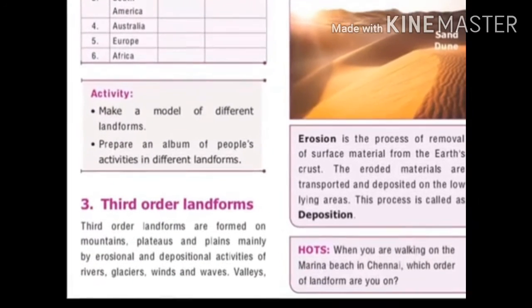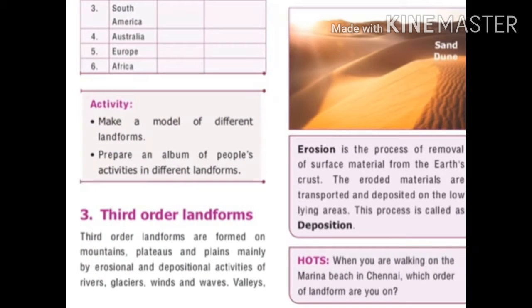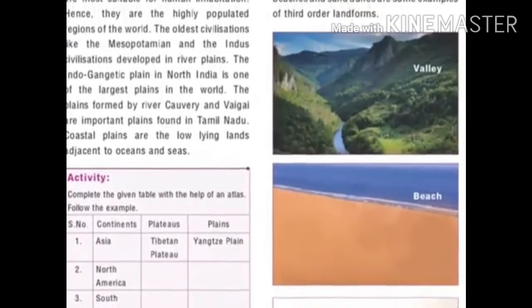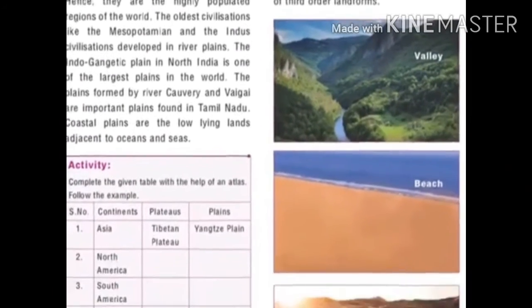Third order landforms are formed on mountains, plateaus and plains mainly by erosional and depositional activities of rivers, glaciers, winds and waves. The third order landforms include valleys, beaches and sand dunes. Erosion is the process of removal of surface material from the earth's crust, and this eroded material is transported and deposited in low-lying areas — a process called deposition.